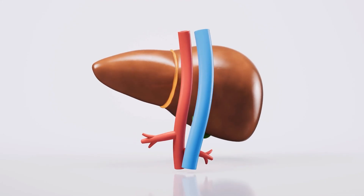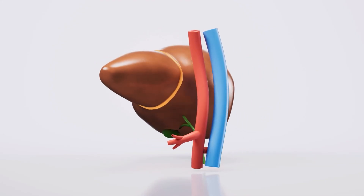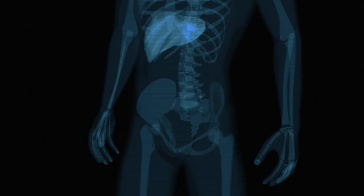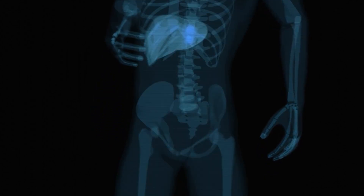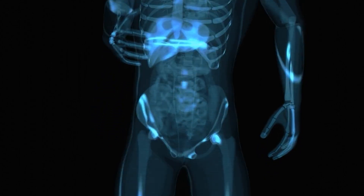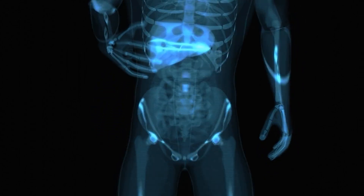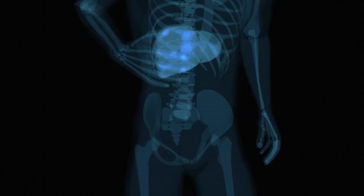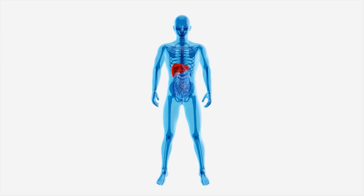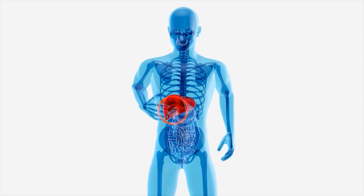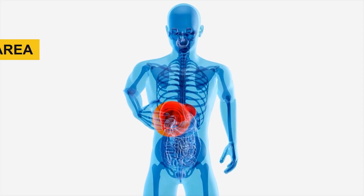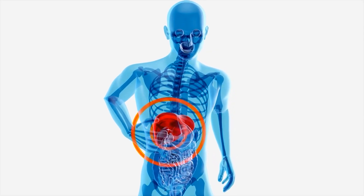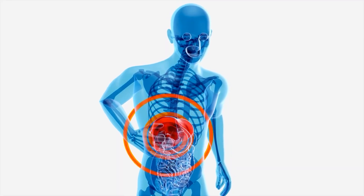The liver capsule is rich in nerve fibers, which makes it sensitive to stretching and pressure. In medical practice, the liver capsule's sensitivity can be used to diagnose certain liver conditions. For example, during a physical examination, a healthcare provider may apply gentle pressure to the right upper abdominal area to check for tenderness or discomfort, which may indicate liver issues.